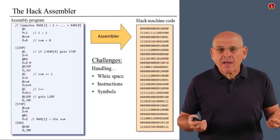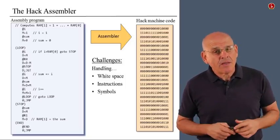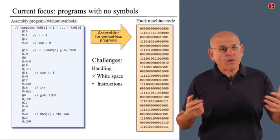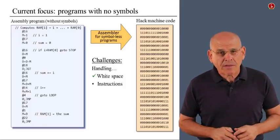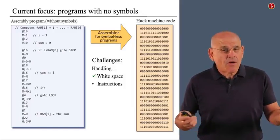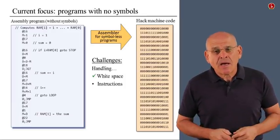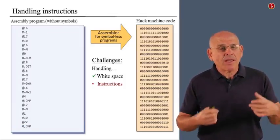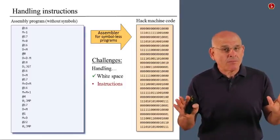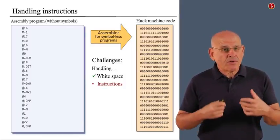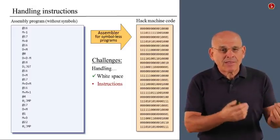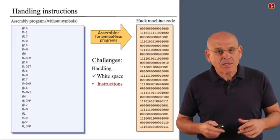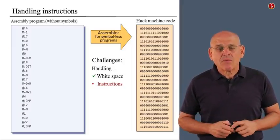Now, in order to make our life easier, we decided to defer the treatment of symbols to a later stage, and we also described previously how to handle white space. Basically, we are going to ignore white space, so what remains is a program that contains instructions only, A instructions and C instructions, without symbols. So, in order to write an assembler that can translate such a program into binary code, we have to know how to translate A instructions and C instructions. And that's exactly what we're going to discuss next.